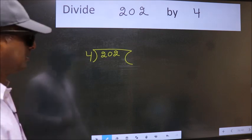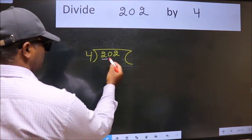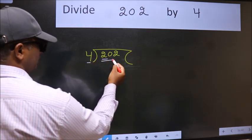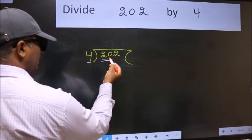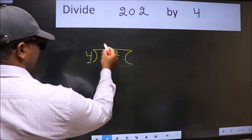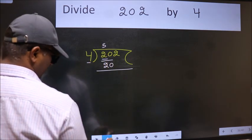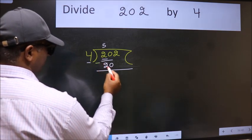Next, here we have 2 and here 4. 2 is smaller than 4, so take two numbers, 20. When do we get 20 in 4 table? 4 times 5 is 20. Now we should subtract. We get 0.